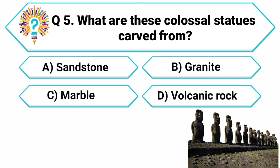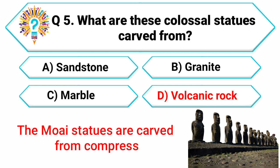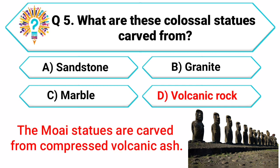Correct answer: D. Volcanic rock. The Moai statues are carved from compressed volcanic ash. You are impressing us with your knowledge.